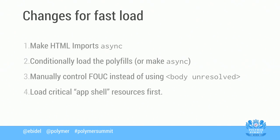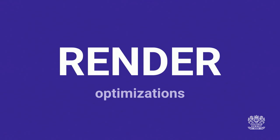To summarize the changes for fast load: make your imports async so they don't block rendering; make your polyfills conditional or async; remove the unresolved attribute to avoid blank screens; and use the app shell idea to get pixels to the screen early. These things together give you a really fast load time. But load time is just part of it — let's talk about what happens when someone's inside your app.